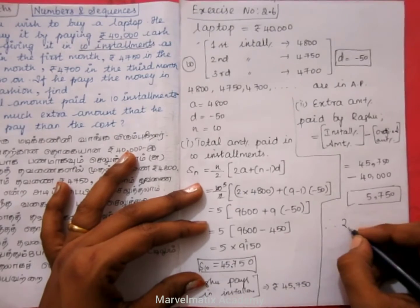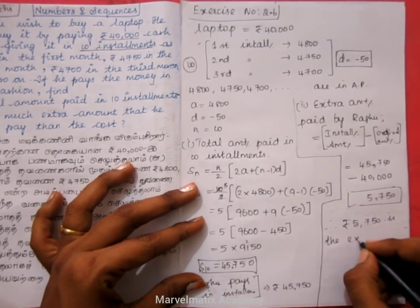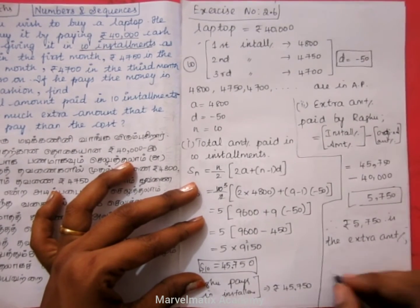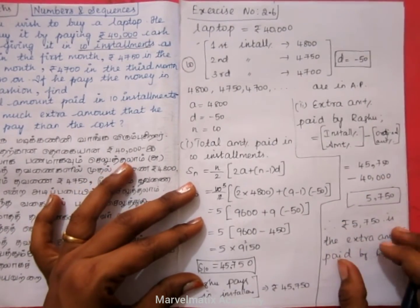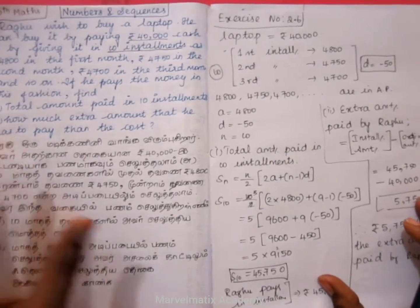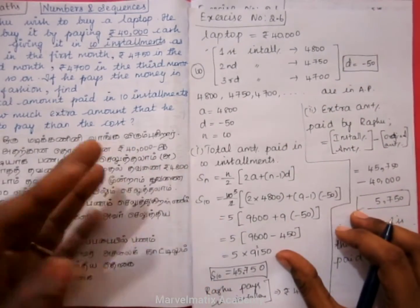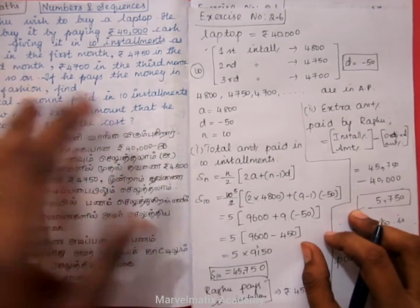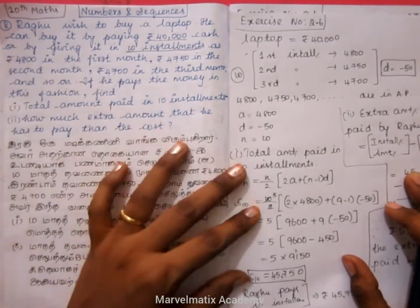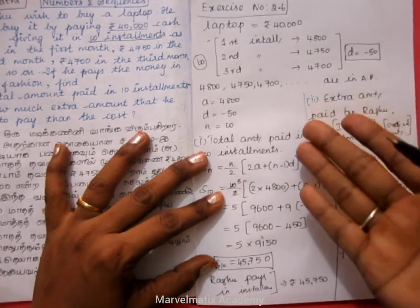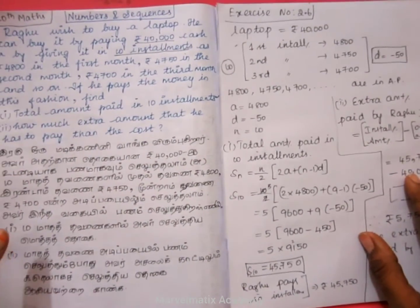The original laptop cost is 40,000. The extra amount paid by Raghu is: 45,750 minus 40,000, which equals 5,750 rupees. So this is the extra amount of money Raghu has to pay.